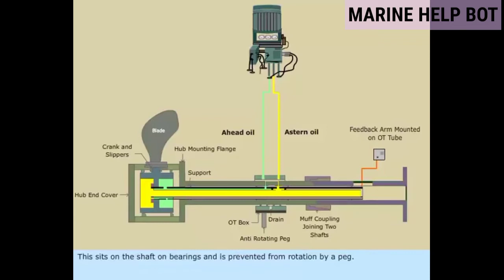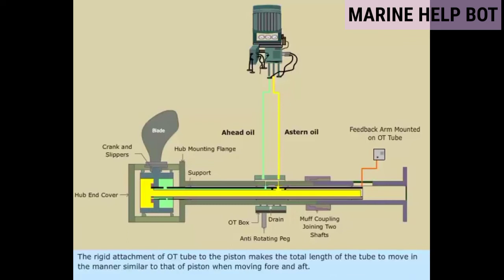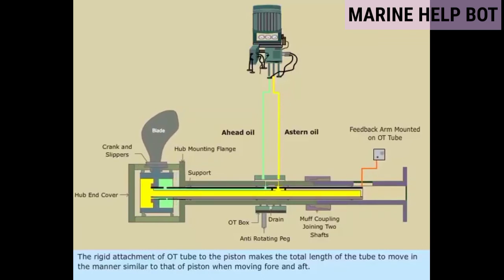The OT box sits on the shaft on bearings and is prevented from rotation by a peg. There are three sections in the inner bore of the box. The existence of positive pressure in the hub is ensured by the ahead and astern oil and the oil drain attached to the hydraulic oil header, which helps in the prevention of air or oil ingress. The rigid attachment of the OT tube to the piston makes the total length of the tube move in a manner similar to that of the piston when moving fore and aft. The tube is also attached with a feedback mechanism which helps in monitoring the position of the blade pitch within the engine room.